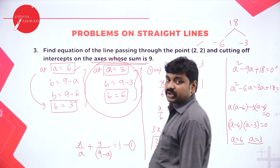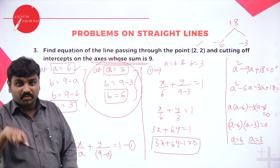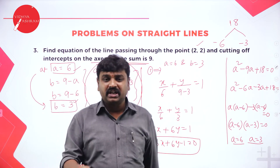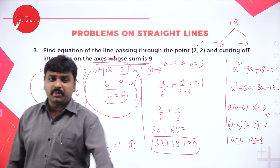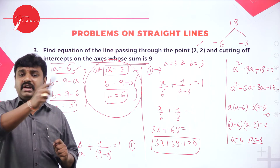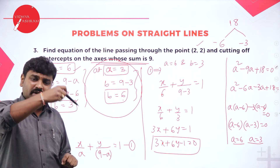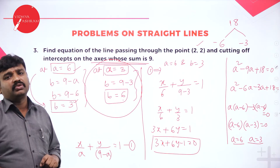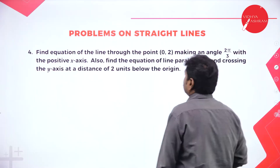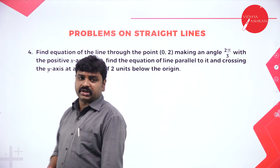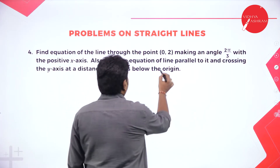To summarize the approach: they told sum of intercepts is 9, so a plus b equals 9, get b as 9 minus a. Use intercept form, substitute b, substitute the passing point to get a quadratic, solve it for two values of a, and use each pair to form two line equations.